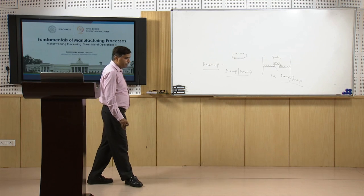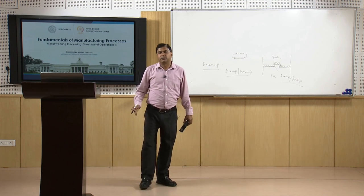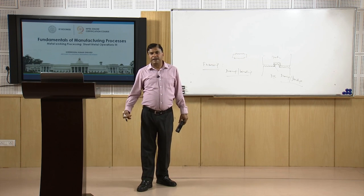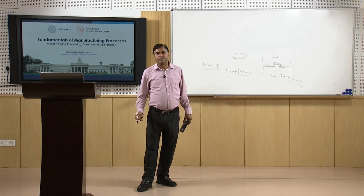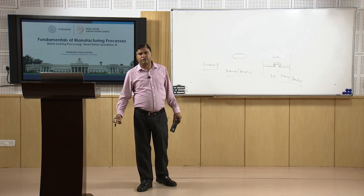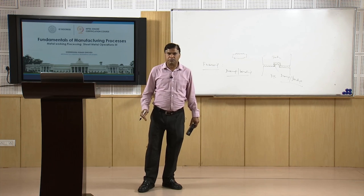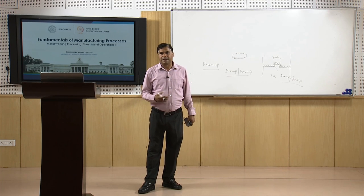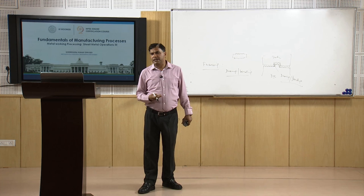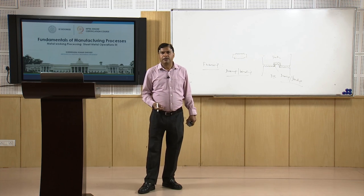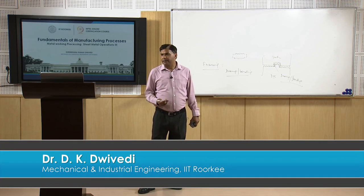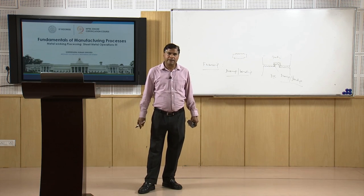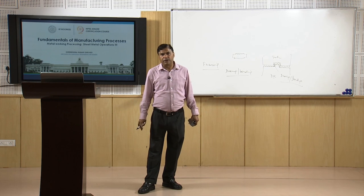In this presentation, I have talked about different processes which use compression, bending, tension and compression, or drawing and bending combinations for producing a variety of shapes. The operations presented include coining, stretch forming, drawing, embossing, and ironing. These are the different operations related to sheet metal processing. Thank you for your attention.